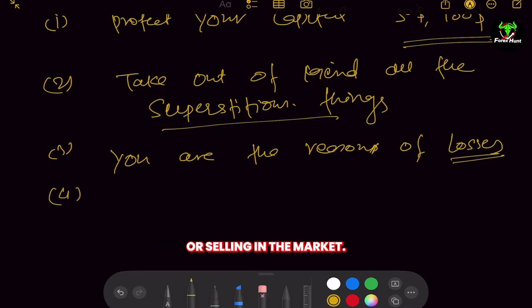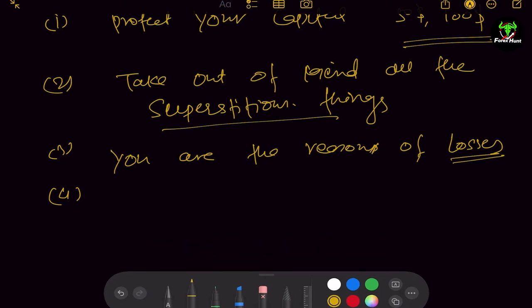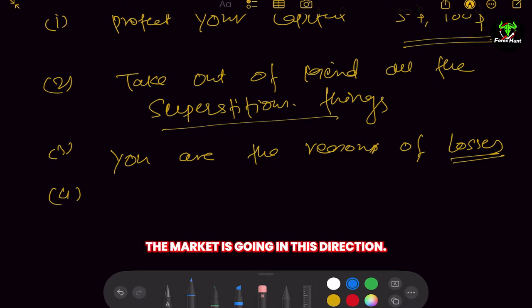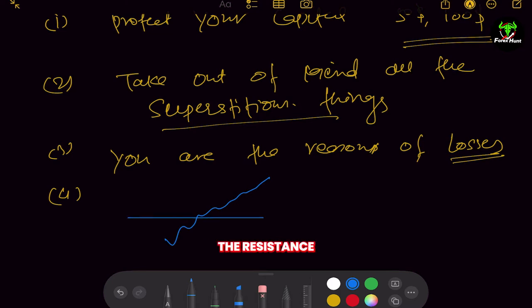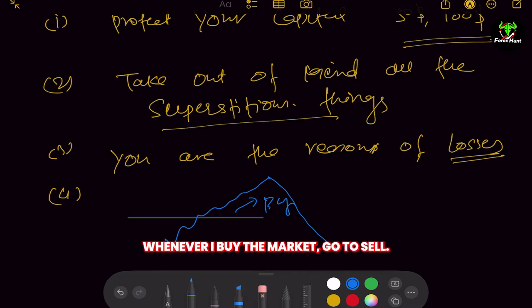You are the only one buying or selling in the market. You see the market going upward and automatically press buy. For example, the market breaks a resistance and you think 'now I need to buy,' you press buy and the market reverses. Then you say the broker is keeping an eye on you — that whenever you buy, the market goes down, and whenever you sell, the market goes up.